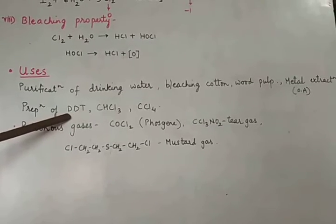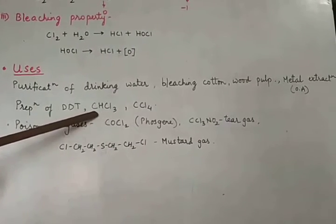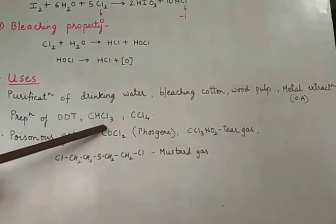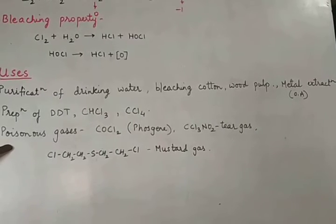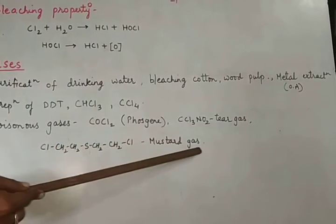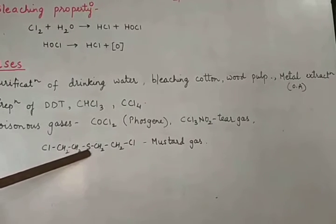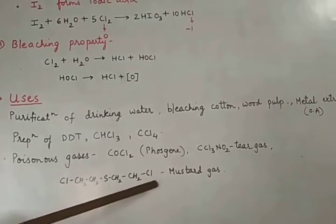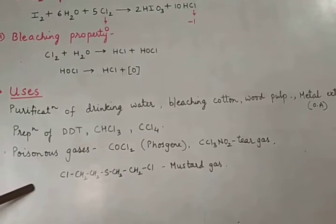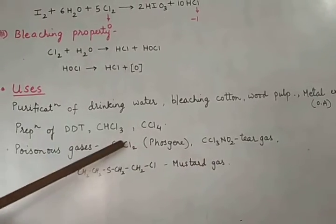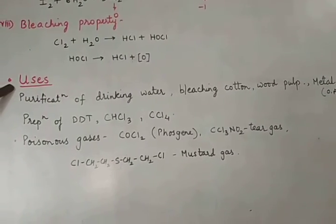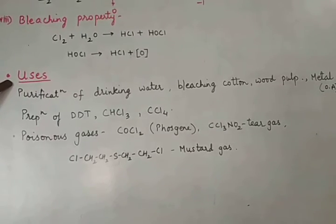Chlorine is used in the preparation of DDT, chloroform (CHCl3), and carbon tetrachloride (CCl4), which we have seen in the halogen derivatives chapter. It is also used in preparation of poisonous gases like phosphine, phosgene (COCl2), tear gas (CCl3NO2), and mustard gas (ClCH2CH2SCH2CH2Cl). The formula of tear gas and mustard gas must be memorized for MCQs, as questions may be asked directly or formula-wise.